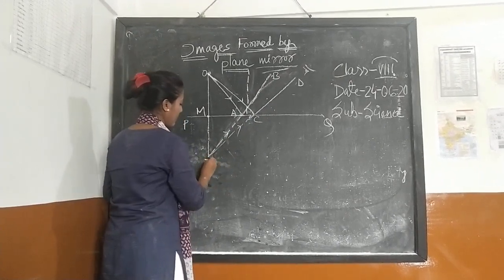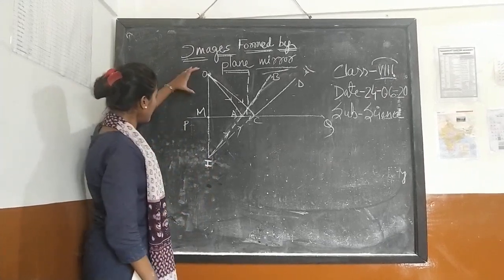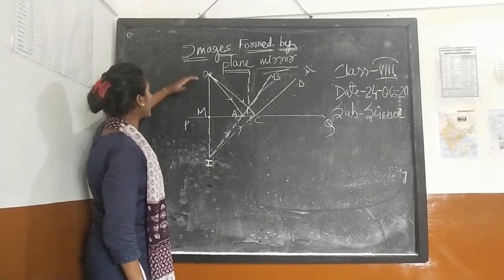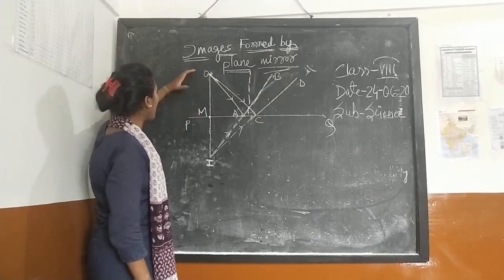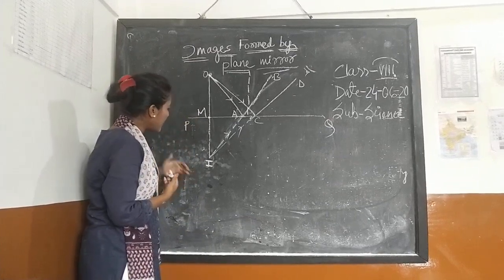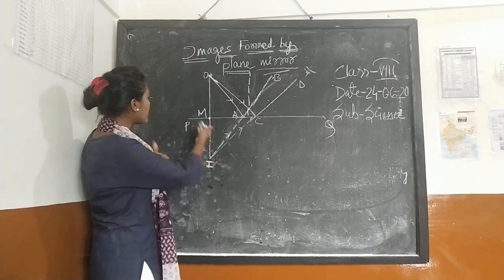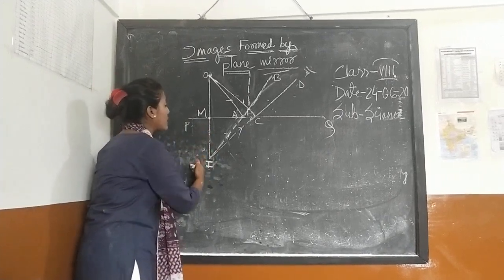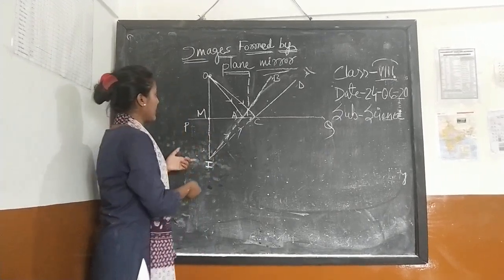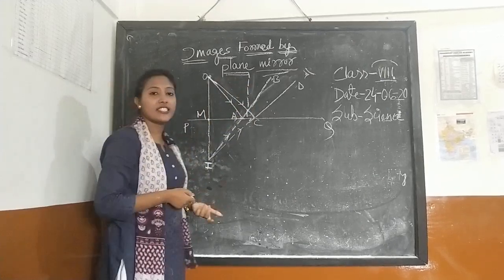We will see that the distance of the object is just equal to the distance of the image. The size of the object is just equal to the size of the image. And for that reason, the plane mirror produces an erect image.